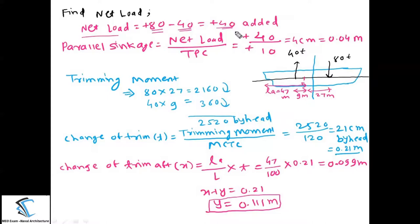The net load is 40 tons added, so think of this 40 tons as initially placed at the center of floatation, then find the parallel sinkage. Parallel sinkage equals net load divided by TPC: 40 divided by 10 equals 4 centimeters, which is 0.04 meters.